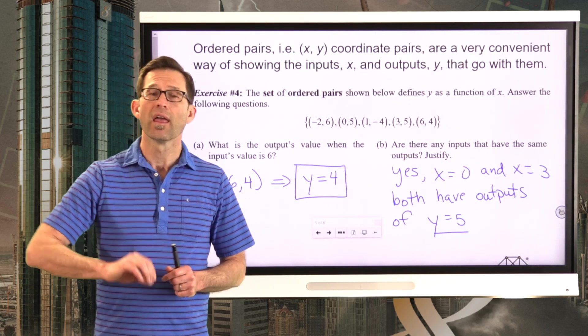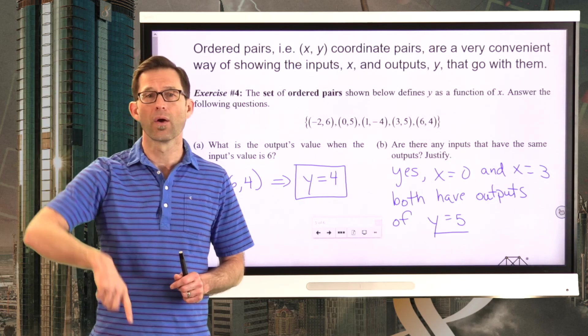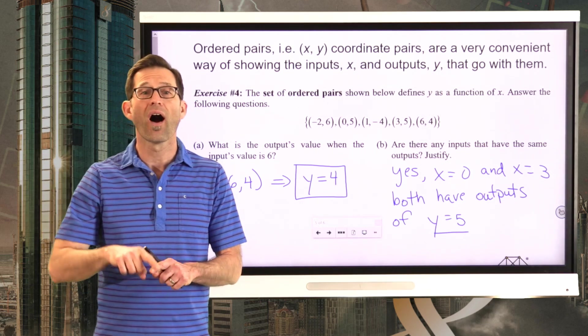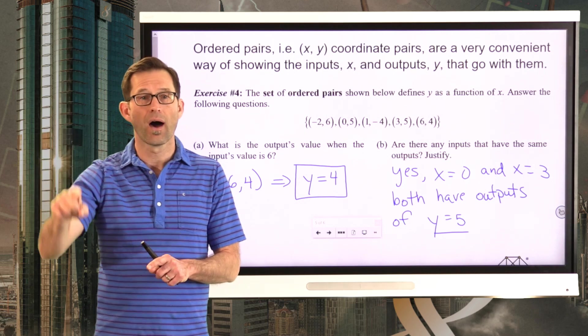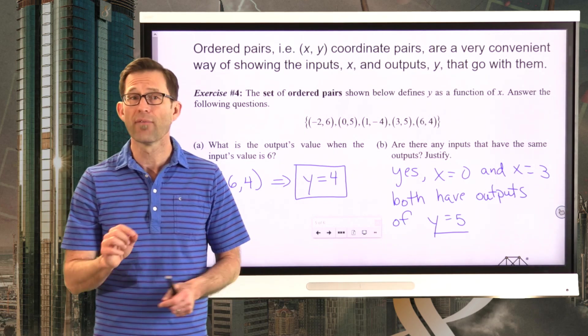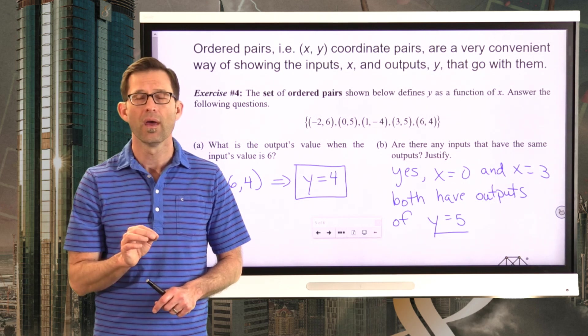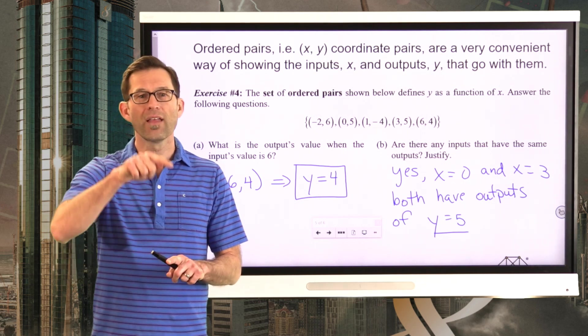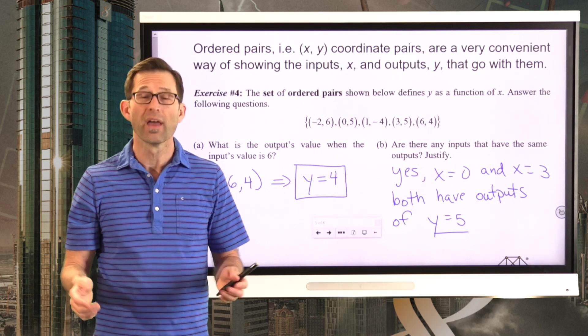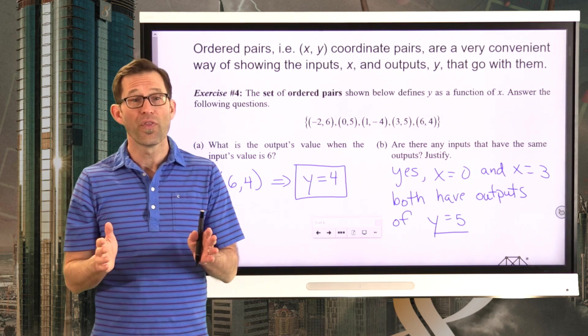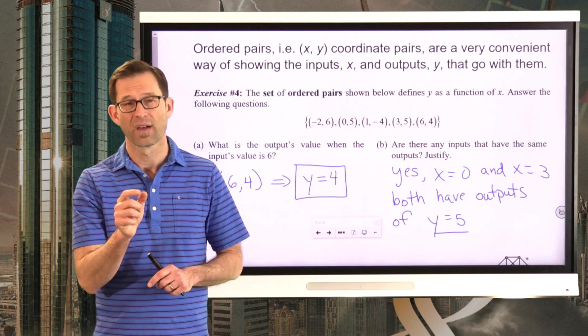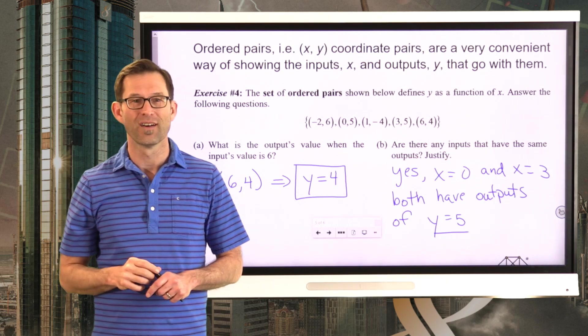A great example is if I tossed a ball up into the air and it went up and then it came back down. And I was recording the height versus the time that the ball has been in the air. Well, every time would have only one height associated with it. But yet, for every height that you hit on the way up, you're also going to hit on the way down. And so one would think, except for the peak height, one would think that every output would get repeated at least once. Again, except for that one right at the top.